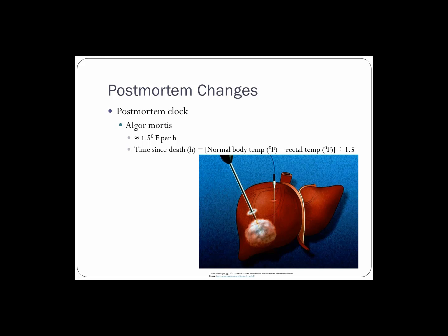Body temperature is taken rectally or in the liver with a special thermometer that can register extremely high and low temperatures. It's taken at these body cores because the skin surface will lose heat very quickly. For a liver temperature, you make a small incision in the skin and insert the thermometer into or under a lobe of the liver to avoid damage. You use this core body temperature to estimate the time of death using this formula: time since death in hours equals normal body temperature in degrees Fahrenheit minus the rectal or liver temperature, divided by one and a half.